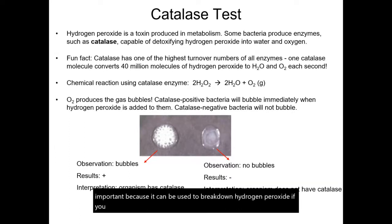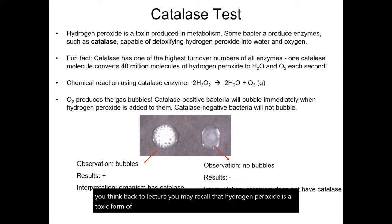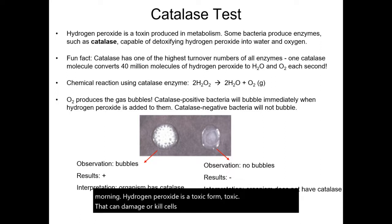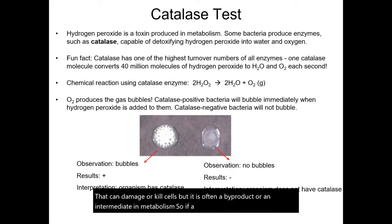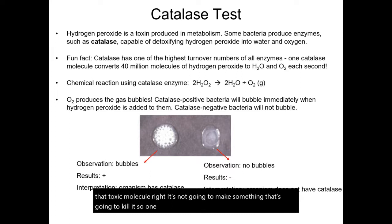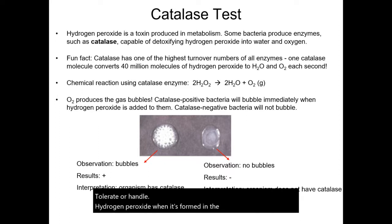If you think back to lecture, you may recall that hydrogen peroxide is a toxic molecule that can damage or kill cells, but it is often a byproduct or intermediate in metabolism. So if a cell has to create hydrogen peroxide for another purpose, that cell has to have a way to deal with that toxic molecule — it's not going to make something that's going to kill it. One way that bacteria can handle hydrogen peroxide when it's formed in the cell is by having the enzyme catalase.